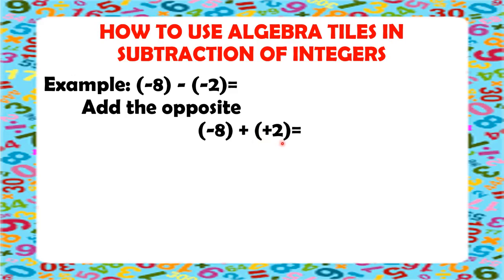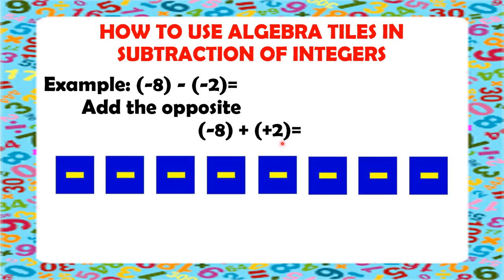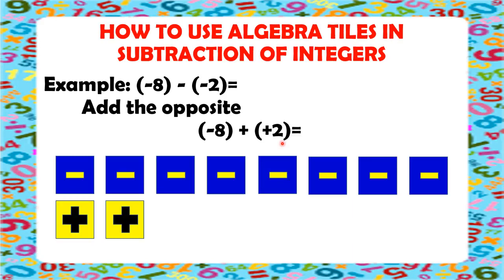So, negative 8 means we have 8 blue tiles. Let's draw 8 blue tiles. Now, we have positive 2, and positive 2 means 2 yellow tiles. So, let's draw 2 yellow tiles. Since we have all the tiles drawn in, now we're just simply going to make 0 pairs. Remember that 1 yellow tile and 1 blue tile will always make 1 zero pair. So, this is our first 0 pair and the second 0 pair.